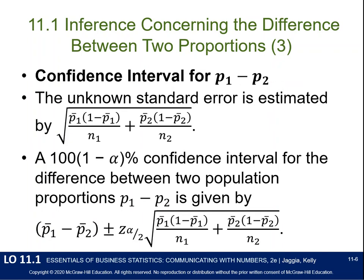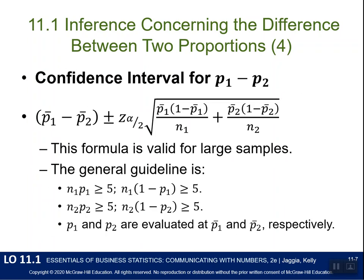Since we've estimated the standard error, we can compute our confidence interval just like we've done before: the proportion from sample 1 minus the proportion from sample 2, plus or minus the z-score (where alpha is divided by 2 for a two-tail test) multiplied by the standard error. The guideline for sample sizes is that n1·P1 ≥ 5, n1·(1−P1) ≥ 5, and we also need to check n2·P2 and n2·(1−P2) — all four must be greater than or equal to 5.